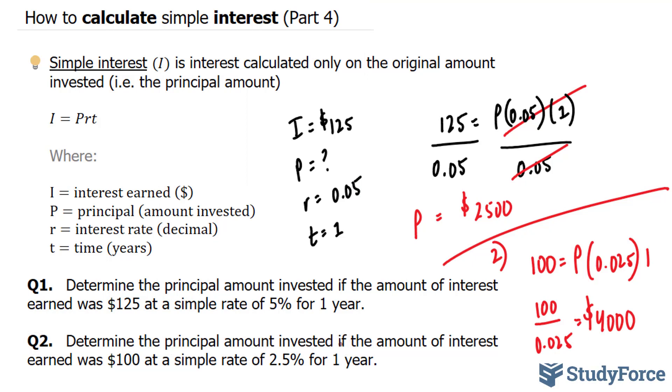So there you have it. That is how to calculate simple interest when everything is provided except for the principal. Make sure you watch part 5 where we tackle even more examples related to this concept.